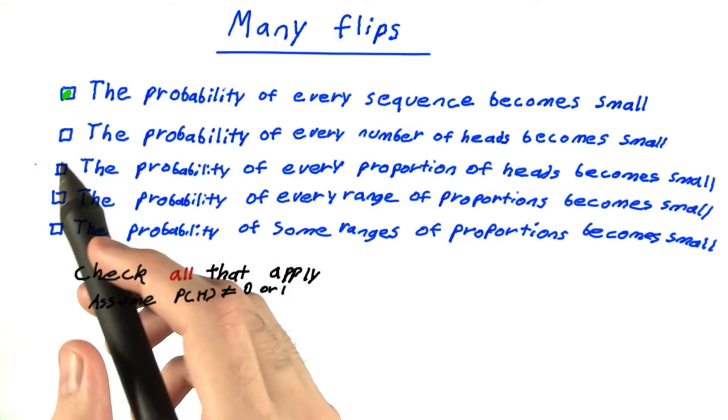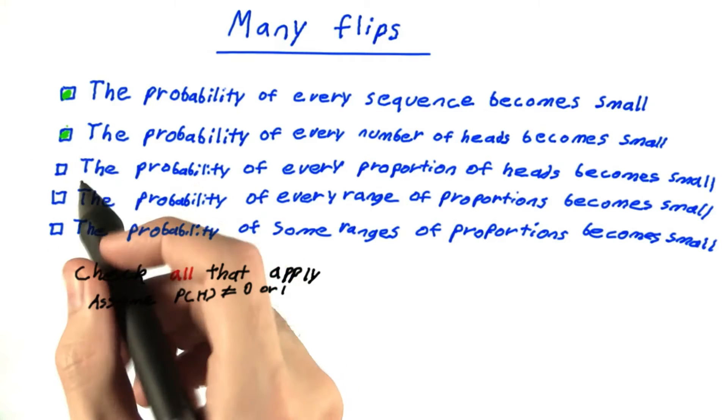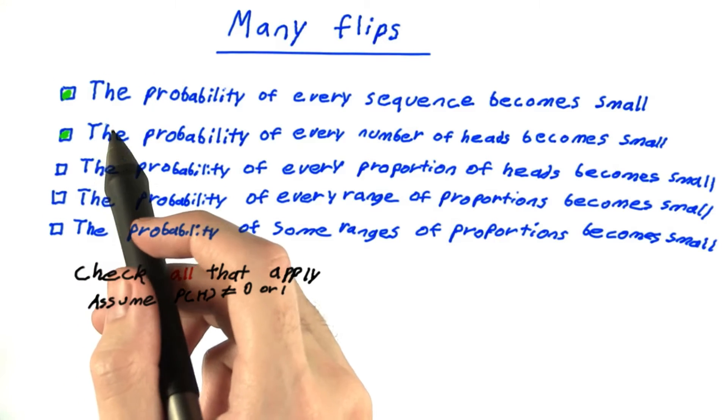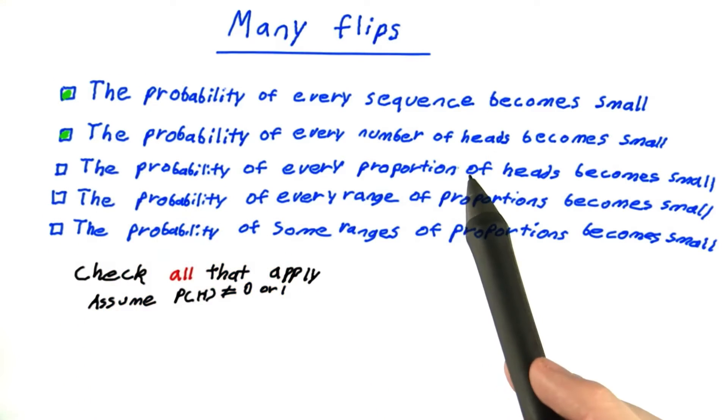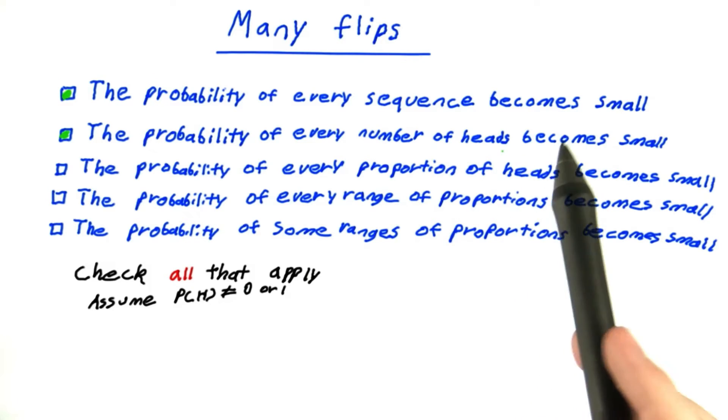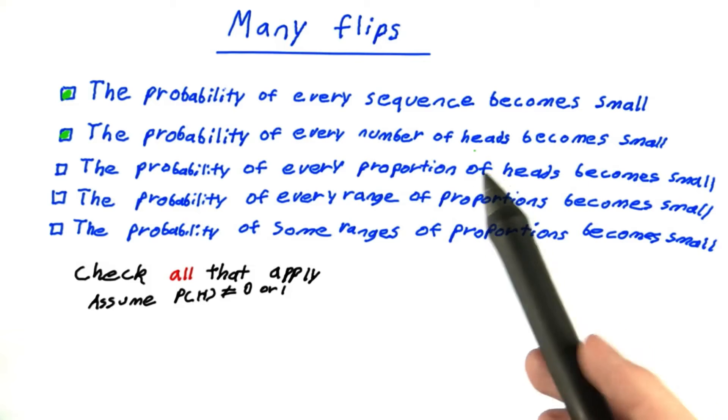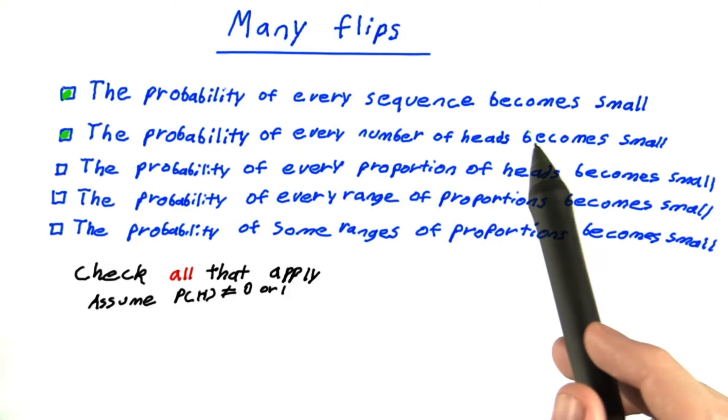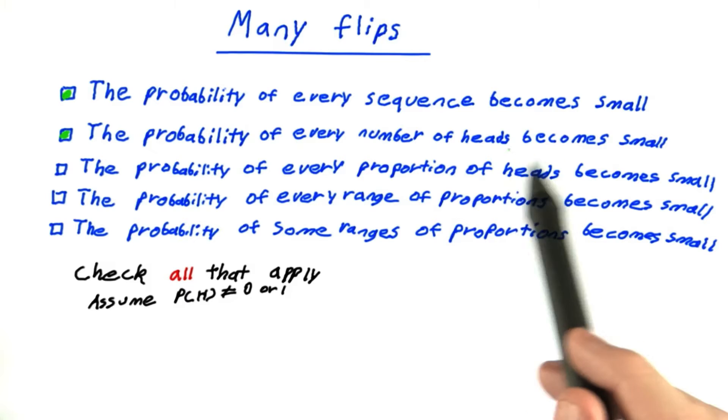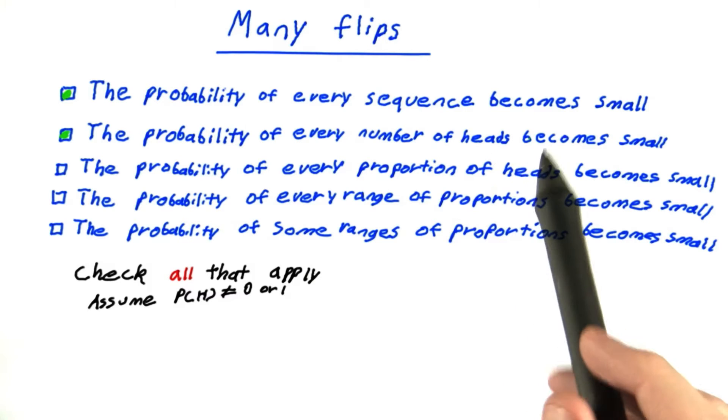The probability of every number of heads becomes small. This is a little trickier, but this is also true. Because as the number of flips increases, the number of heads must increase, even if we're assuming some low probability for it. So it becomes farther and farther away from what we expect.